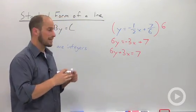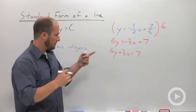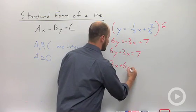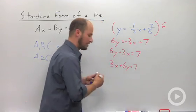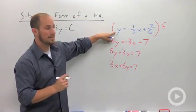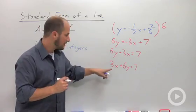Just a little bit of rearranging because our x term is supposed to be first. 3x + 6y = 7. These are the exact same line. This one is in slope intercept. This one is in standard.